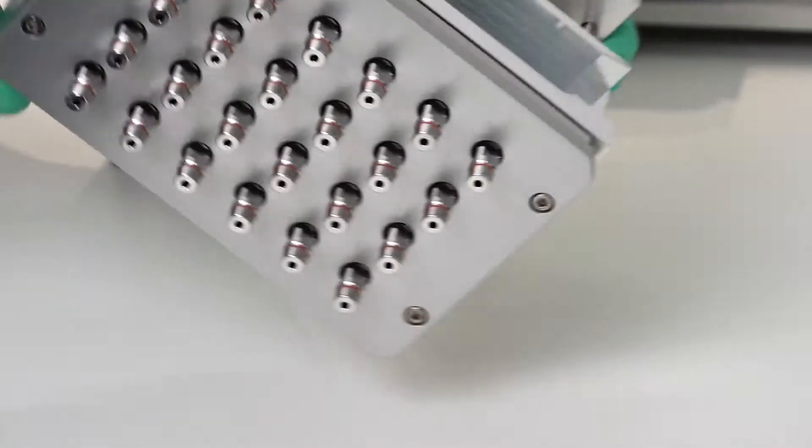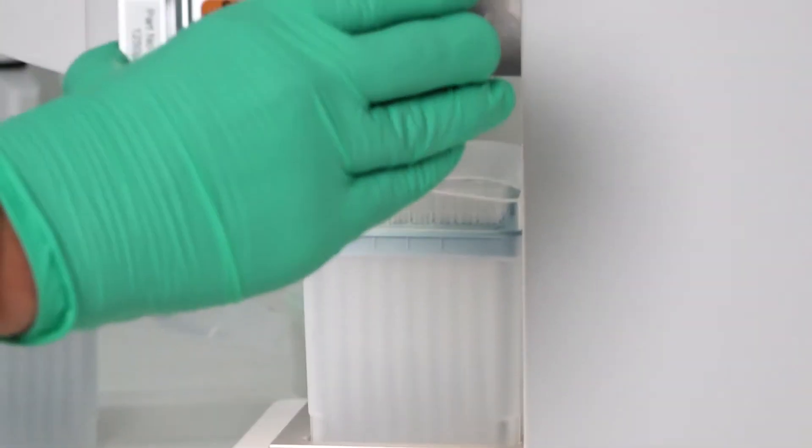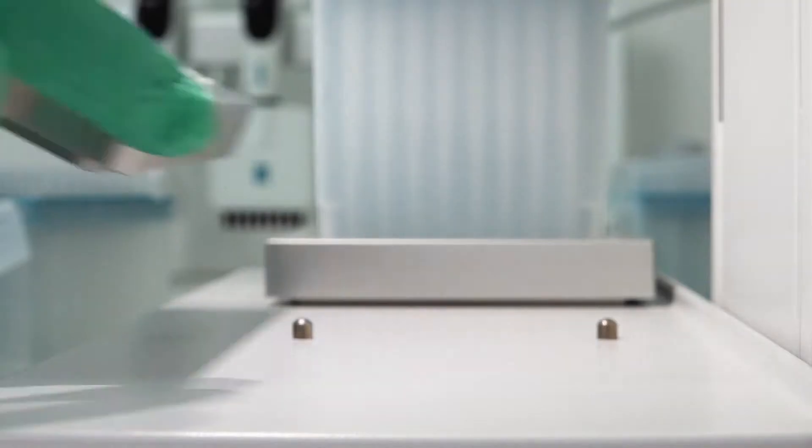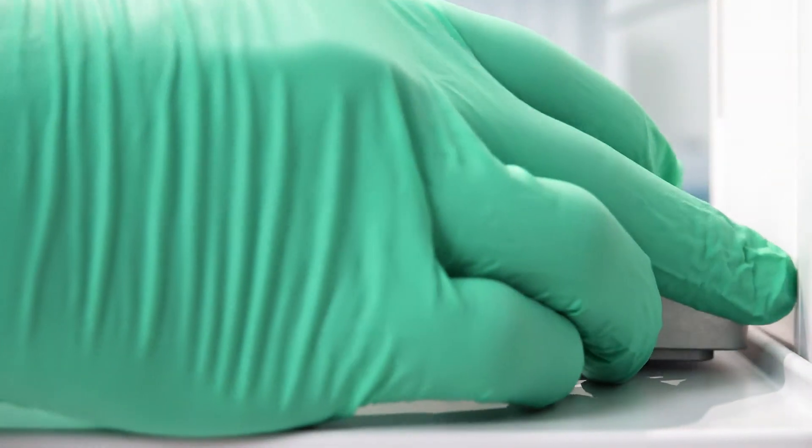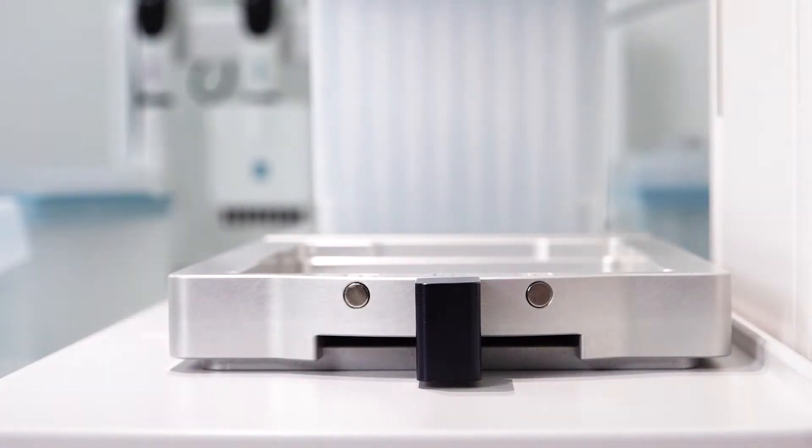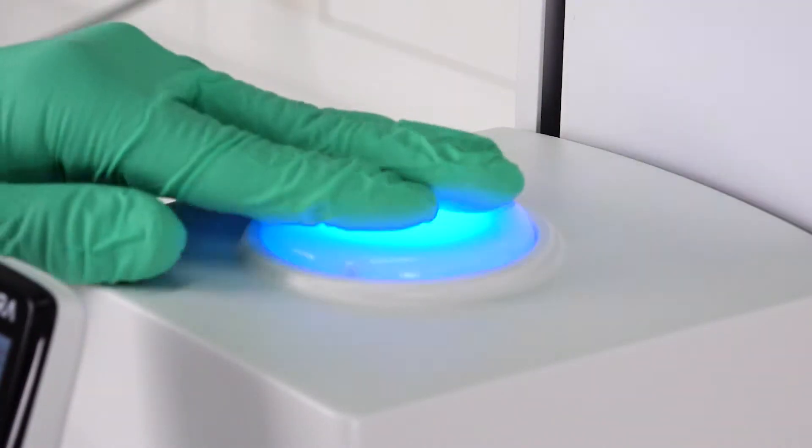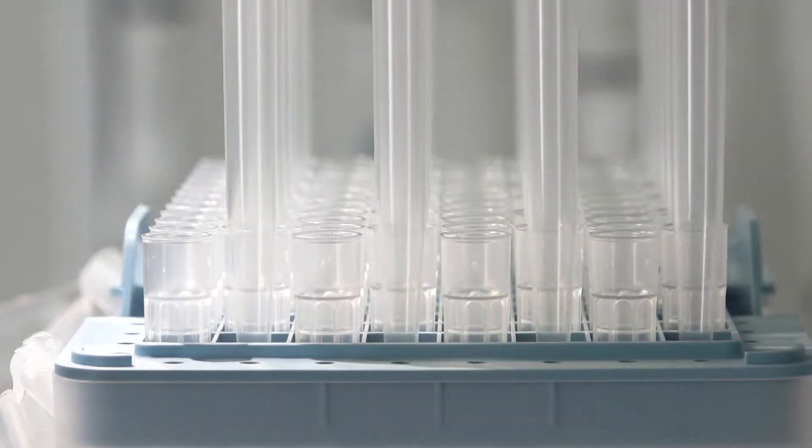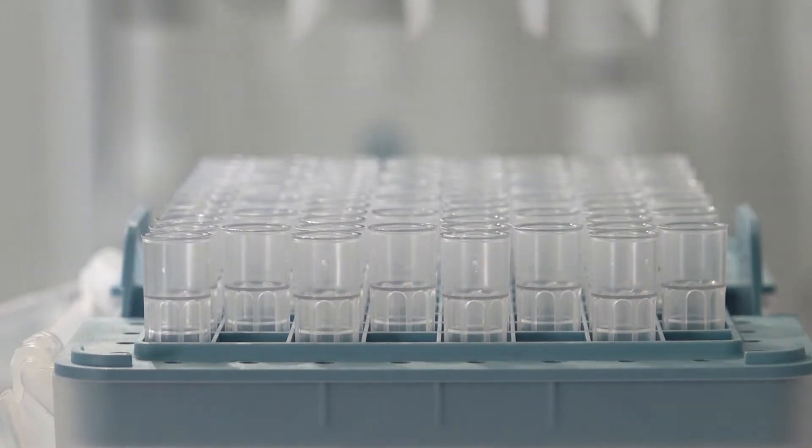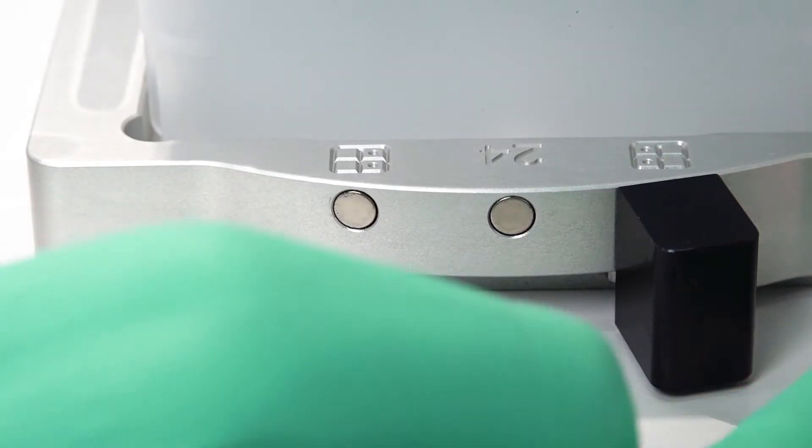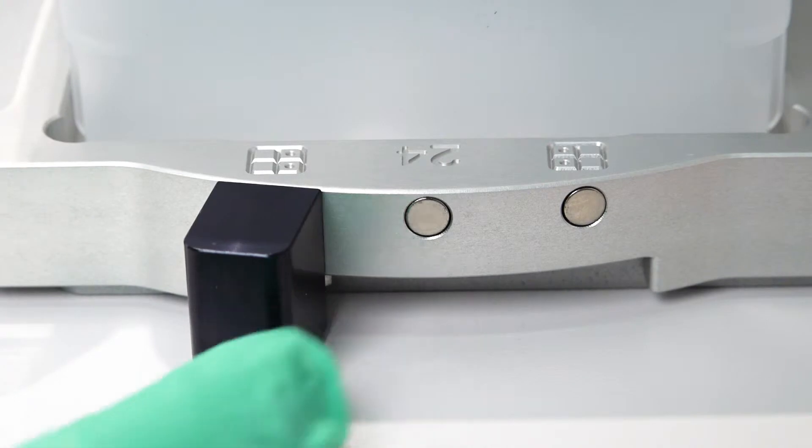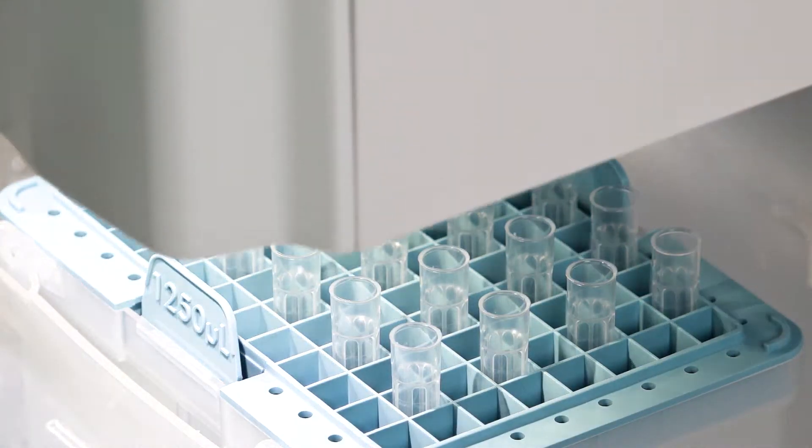To begin, simply install the head into a ViaFlow 96 or ViaFlow 384 and place the 24-channel plate holder on the deck. Next, load grip tips electronically from the tip rack. Grip tips are guaranteed to load perfectly and never leak or fall off. From a single rack, you can load four times when using the 24-channel head.